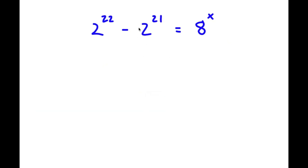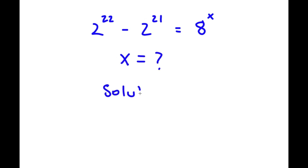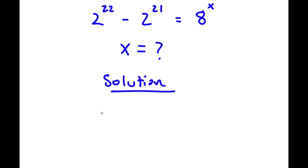All right, so in this problem I have 2 to the power of 22 minus 2 to the power of 21 is equal to 8 to the power of x. So I know at first glance this problem looks pretty complicated. However, it's actually easier than you might think. So for this problem I'm solving for the value of x. First, start with 2 to the power of 22 minus 2 to the power of 21 is equal to 8 to the power of x.